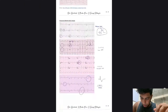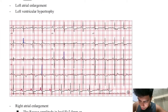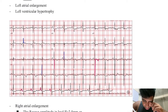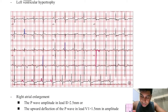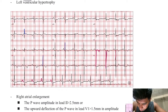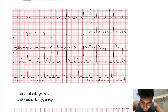Looking at the ECGs — in V5 and V6 you get a dip, this large S wave dip, and in V1 and V2 you get a large R wave. You can see the S wave dip in V6 and the R wave rise, as well as the S wave dip in V2. This is relevant to ventricular hypertrophy.